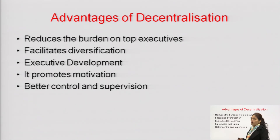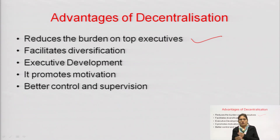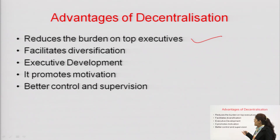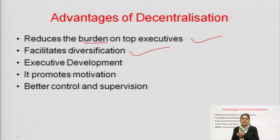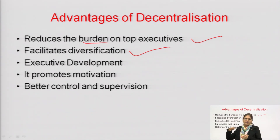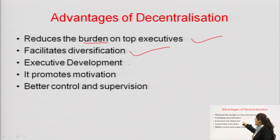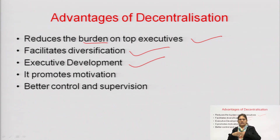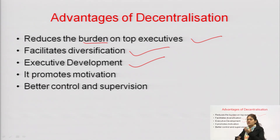Advantages of decentralization: Number one is it reduces the burden of top executives, because in decentralization authorities and responsibilities are divided into certain departments. Next is it facilitates diversification — if work is divided properly to certain departments, they can think of diversification and innovation. Next is executive development — if authority and responsibility is placed on the heads of departments or staff officers, the executives will be developed because they get the scope and opportunity to manage the whole department individually.